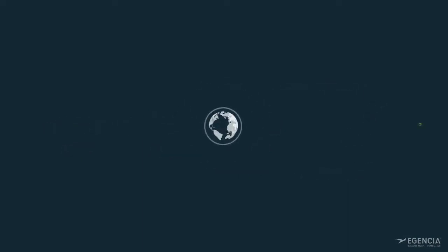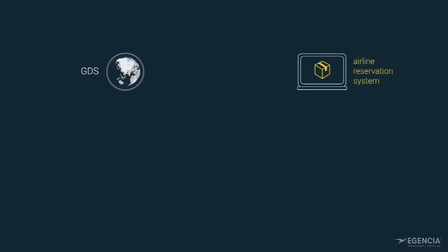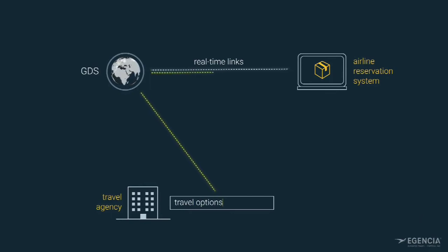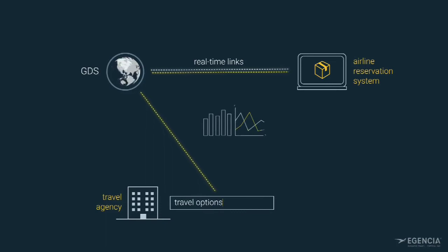A GDS holds no inventory itself. The inventory is held on the airline reservation system. A GDS will have real-time links to the airline IT systems. When a travel agency is searching for travel options, the GDS manages the requests to all relevant airlines. This enables the travel agent to compare various flights and associated add-ons, like bags, from all the vendors who are part of that GDS network.